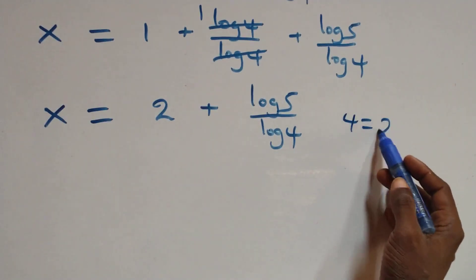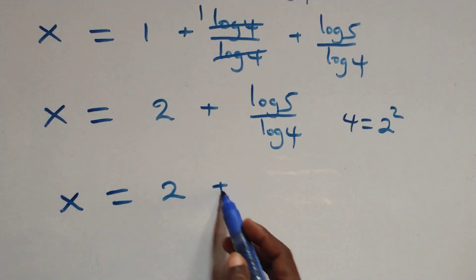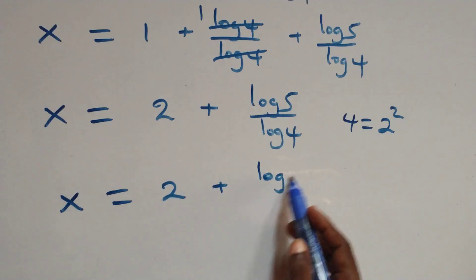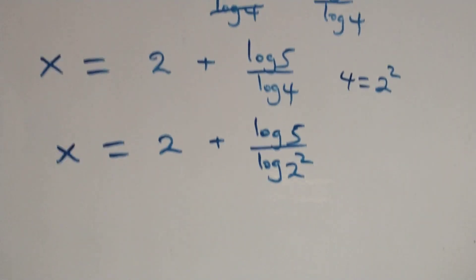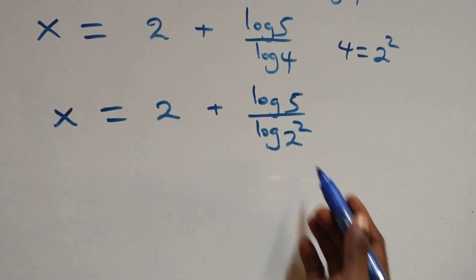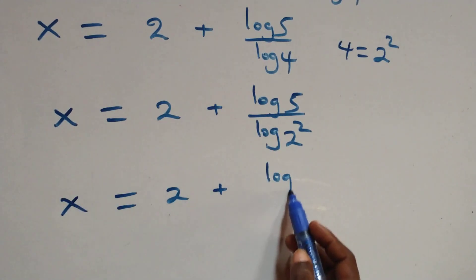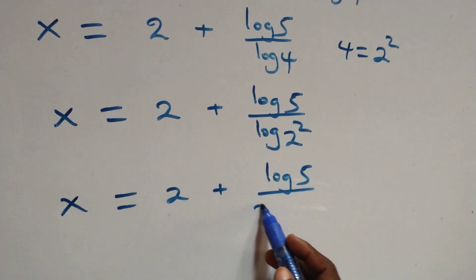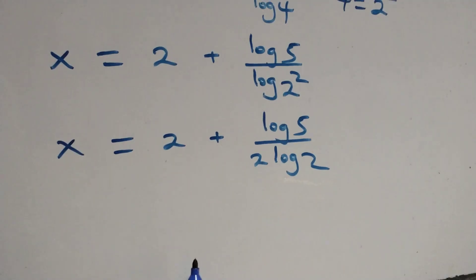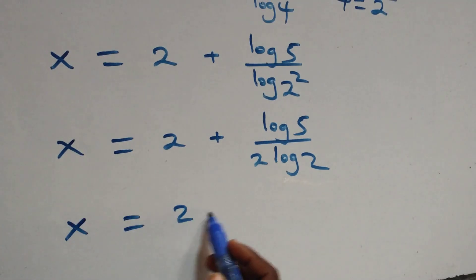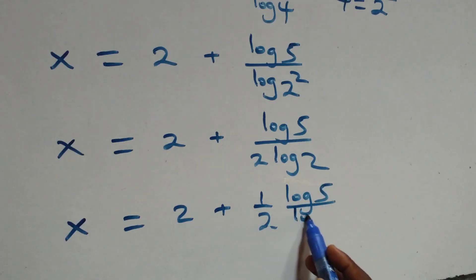Now 4 can be written as 2 squared, so x equals 2 plus log 5 over log(2 squared). Applying the power rule, log(2 squared) becomes 2 log 2, giving x equals 2 plus log 5 over 2 log 2. This can also be written as x equals 2 plus one-half times log 5 over log 2.